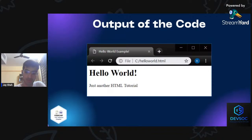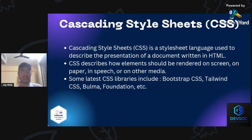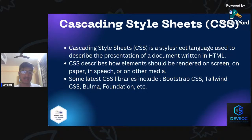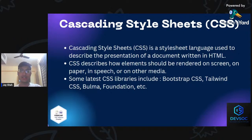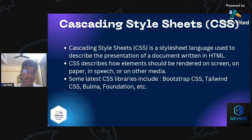Moving on to CSS — Cascading Style Sheets — a style sheet language used to describe the presentation of an HTML document: how elements should be rendered on screen, on paper, in speech, or other media. There are many CSS libraries today like Bootstrap, Tailwind CSS, Bulma, and Foundation. These libraries reduce your effort — for example, 'display flex' becomes just 'flex' — while keeping the same functionality.